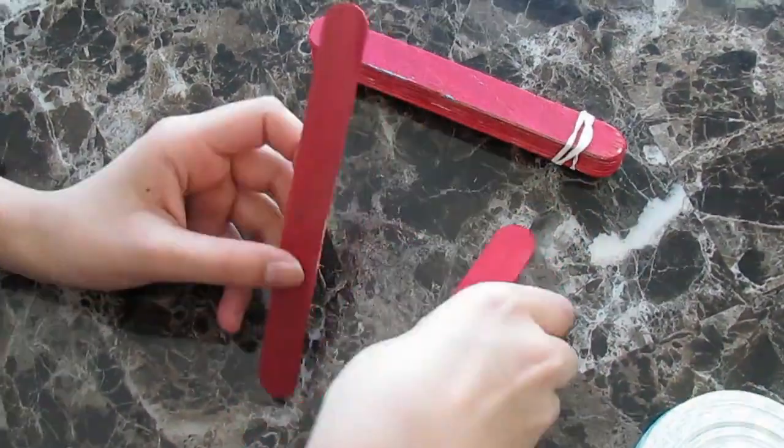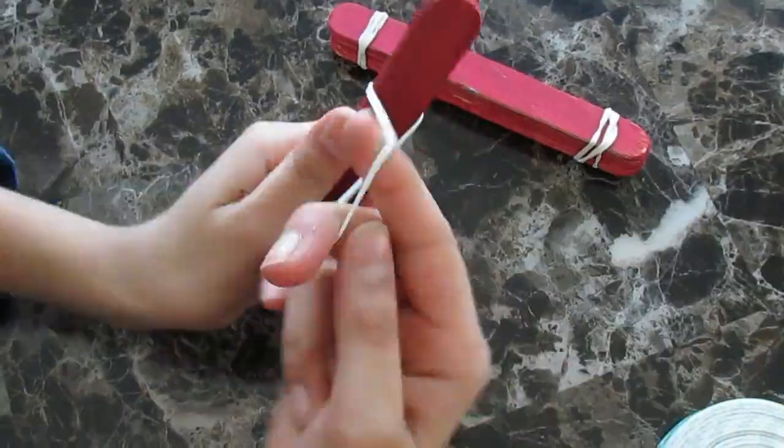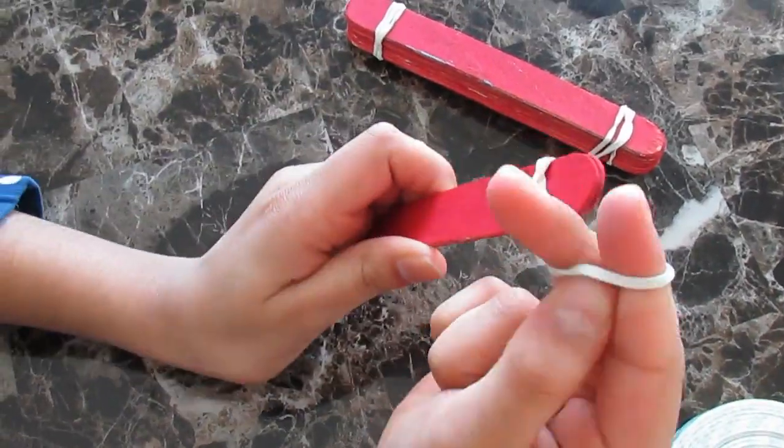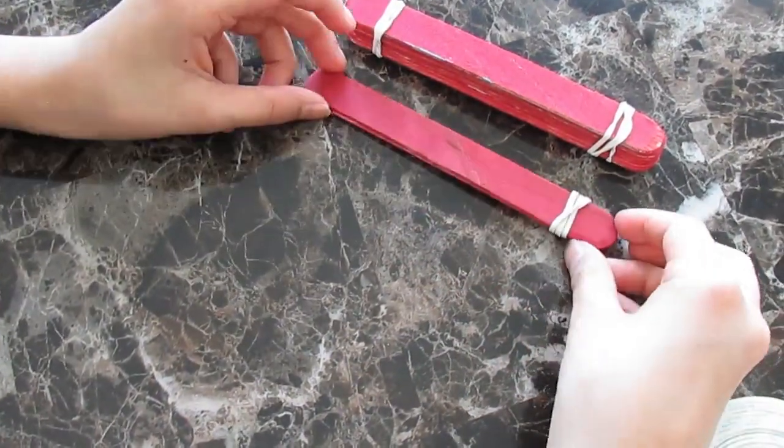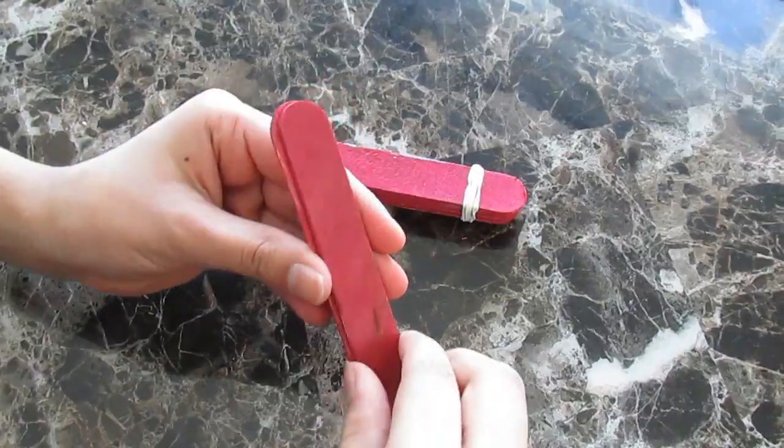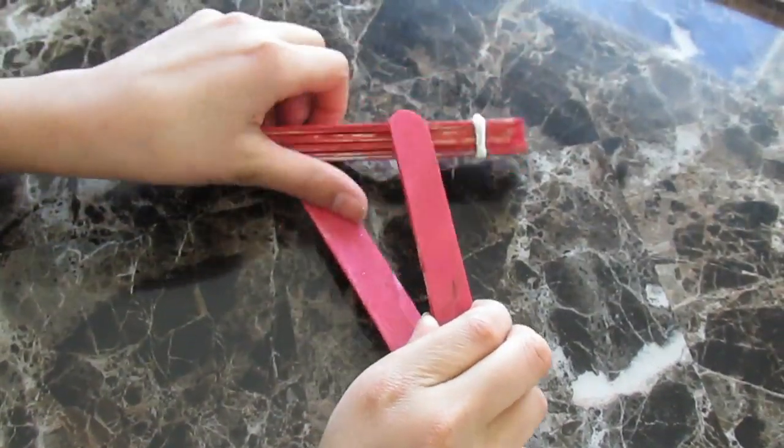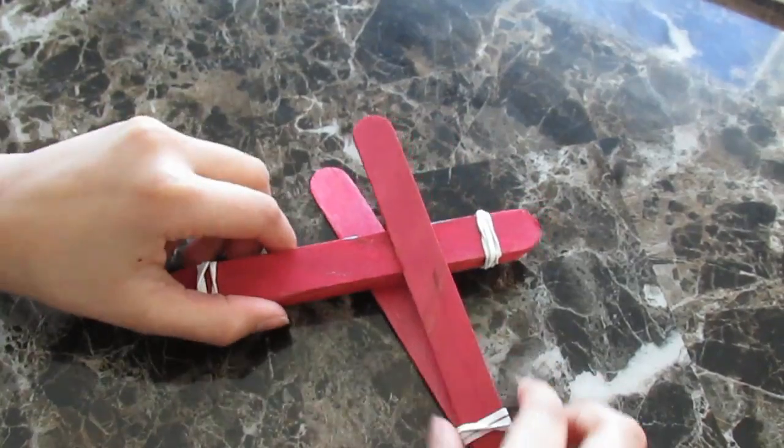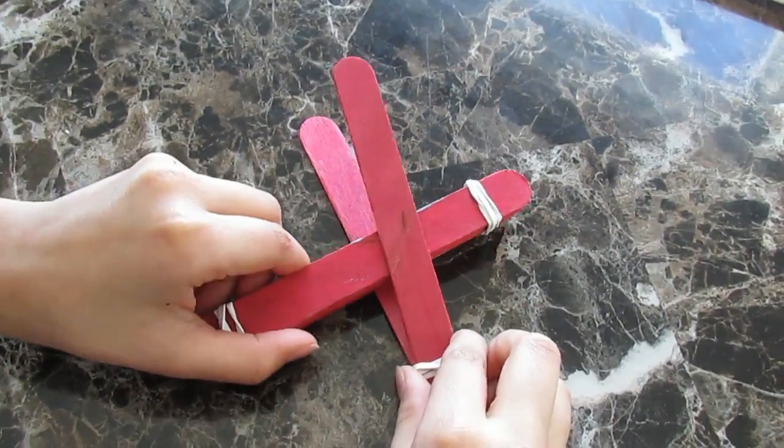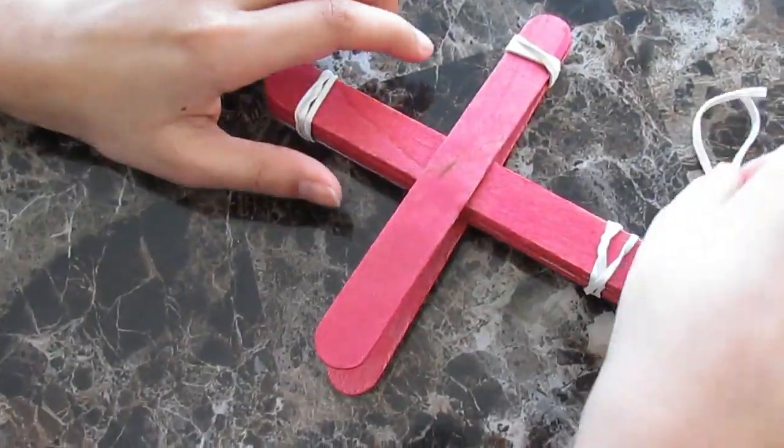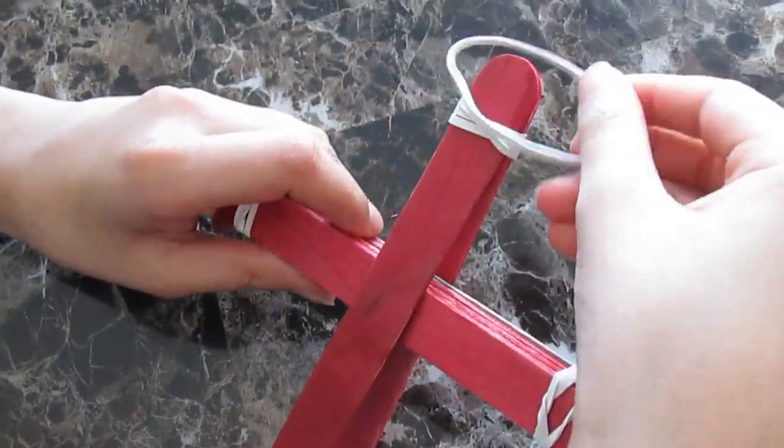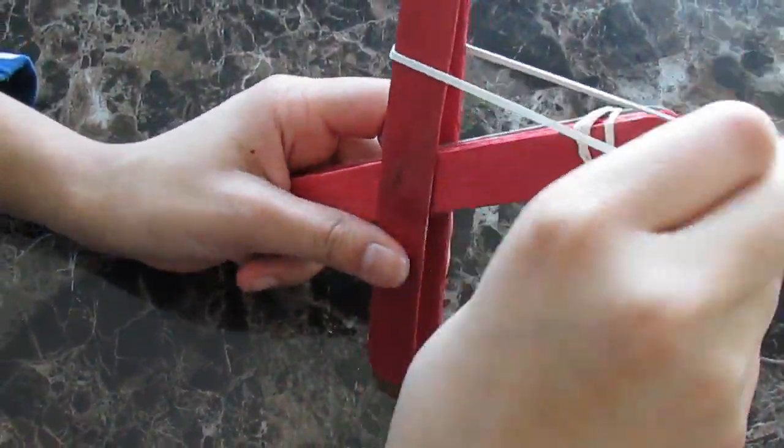Take two popsicle sticks and stack them together. Wrap a rubber band around one end of these two sticks to hold them together. Pull the two popsicle sticks slightly apart and place the larger stack of sticks in between the two. Attach the larger stack to the stick on the top using a rubber band.